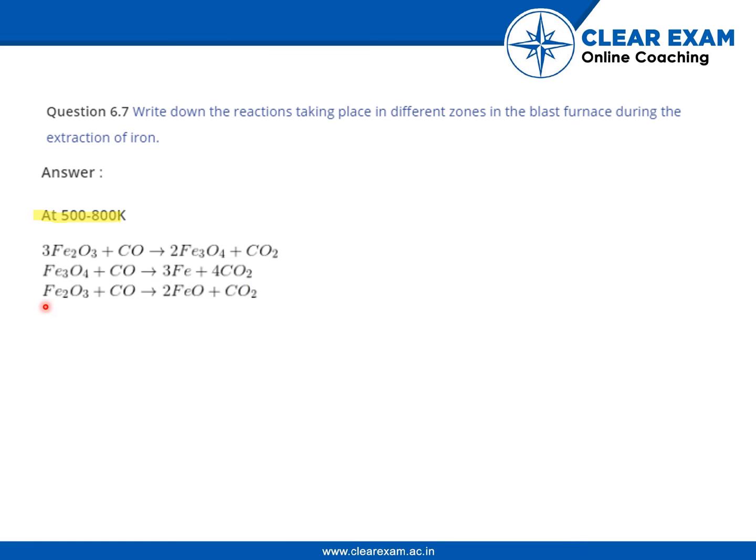Fe2O3 plus CO gives FeO plus CO2. Limestone also decomposes to calcium oxide, which removes silicate impurity from the ore as slag. The formula of limestone is CaCO3, which decomposes into calcium oxide and carbon dioxide.